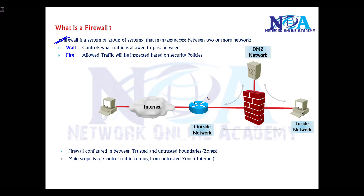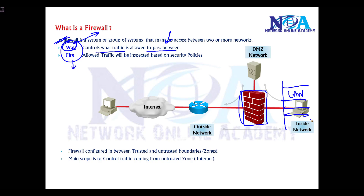Technically, a firewall is a device which manages the traffic between two or more different networks. The 'wall' refers to what controls which traffic is allowed to pass through. Here you have a firewall, with users sitting in the LAN — the local network — connecting to the internet, which is the outside network. There are also DMZs where FTP or HTTP servers are technically placed.